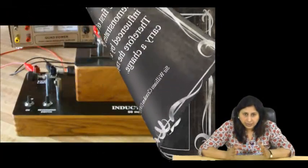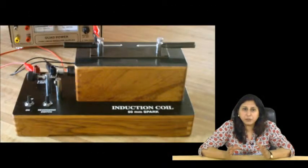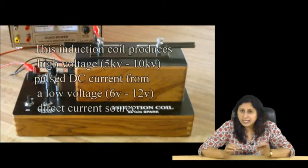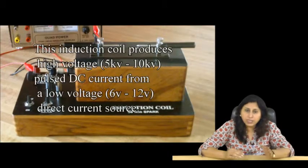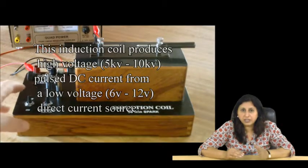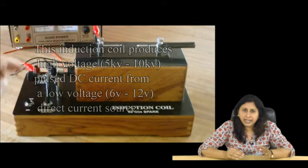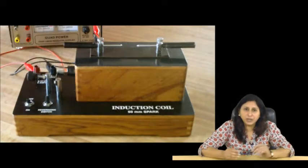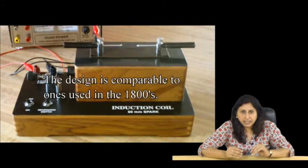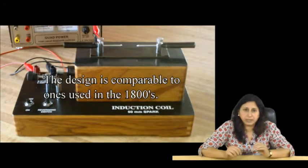This induction coil produces high voltage, 5 kV to 10 kV, pulsed DC current from a low voltage, 6 volt to 12 volt, direct current source. The design is comparable to the ones used in the 1800s. Changing the polarity of the magnet attracts or repels the beam.